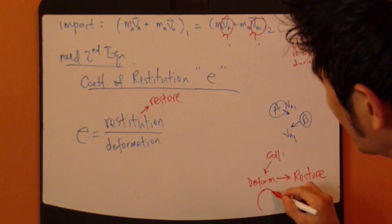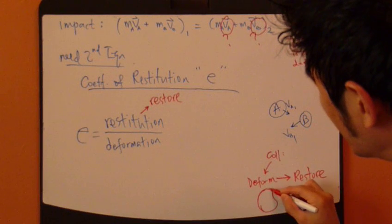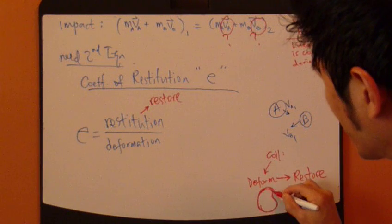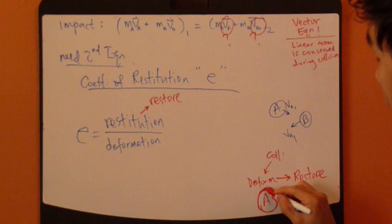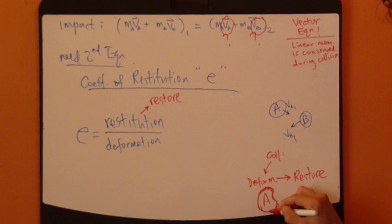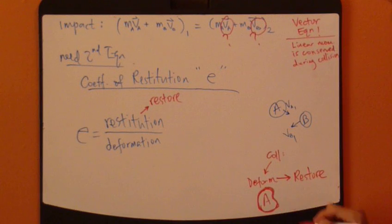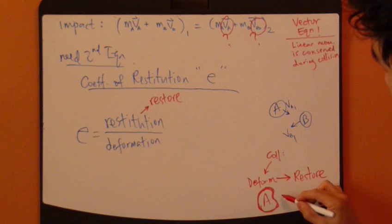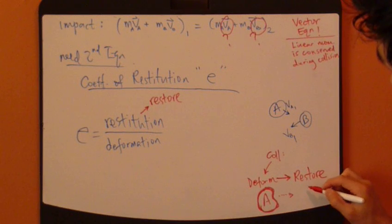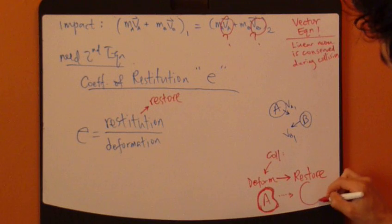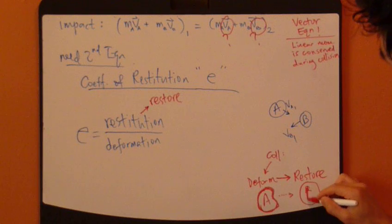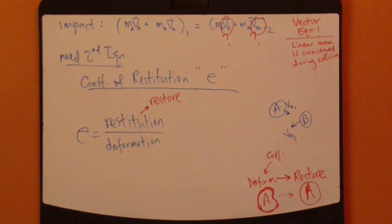So deformation could be something like this. It could be more graphic. This object, object A, it would deform during sometime during this collision. And then sometime later, it will restore.